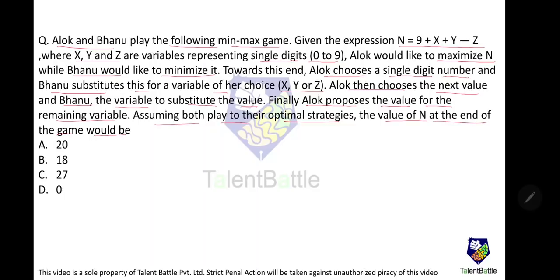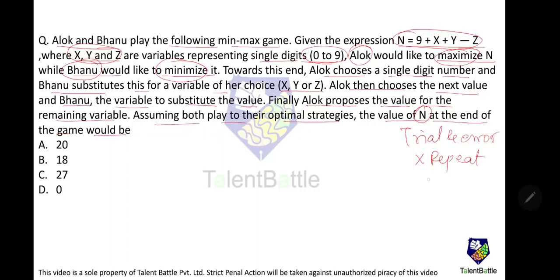This game requires trial and error to find the maximum value of n. Here n = 9 + x + y − z, where Alok maximizes and Banu minimizes. x, y, z can take values between 0 and 9. We will try not to repeat digits. If repetition were allowed, the optimal values would be x = y = z = 9, giving n = 27.